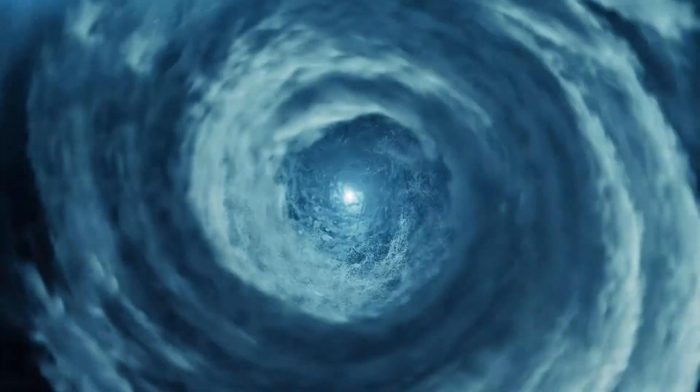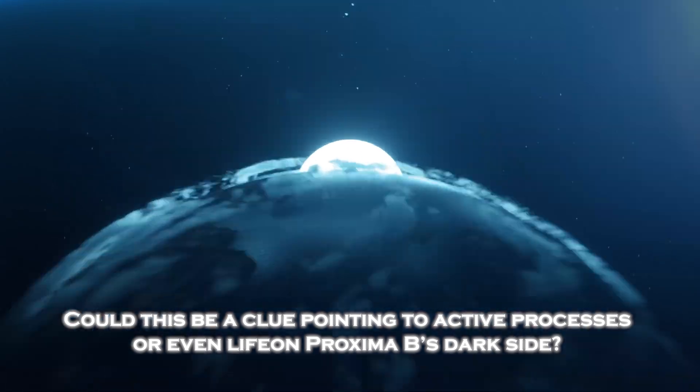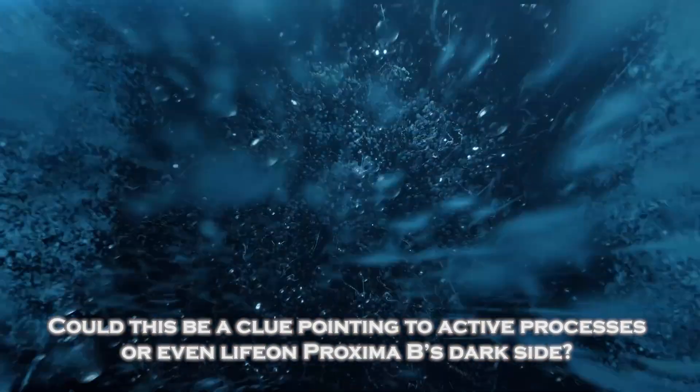The uneven distribution of these gases suggests localized sources, possibly linked to the mysterious emissions. Could this be a clue pointing to active processes, or even life, on Proxima b's dark side?